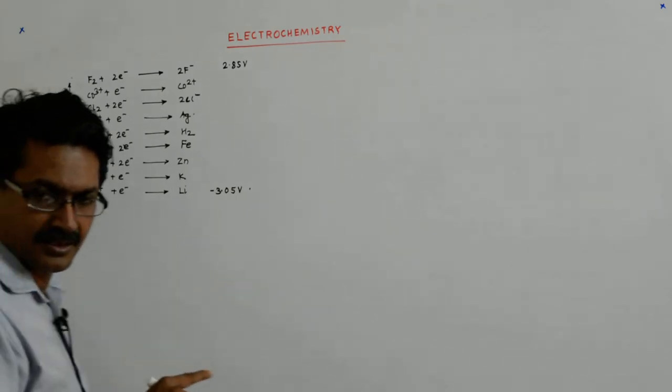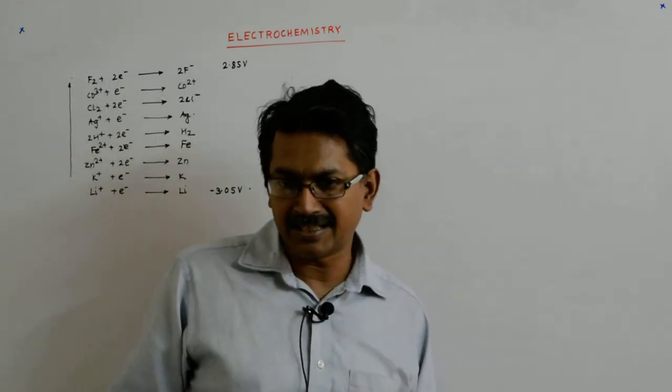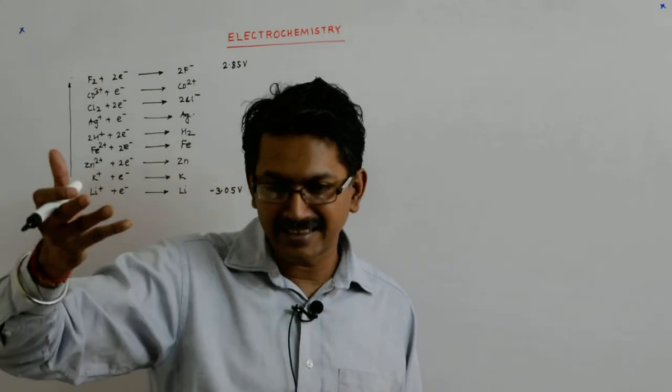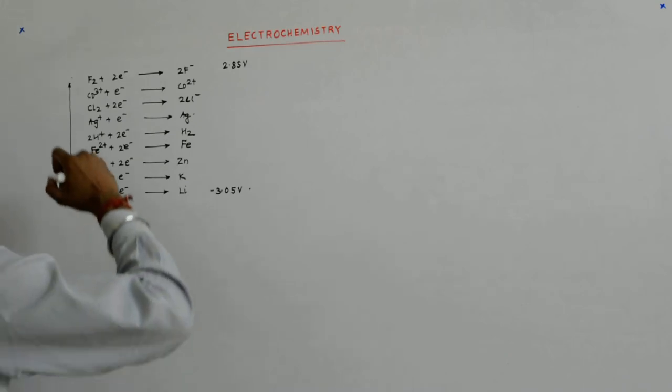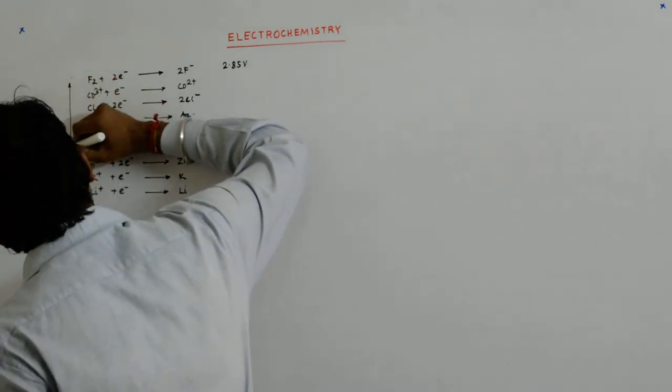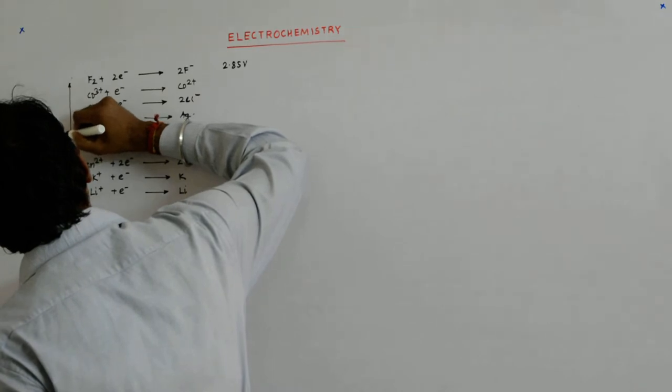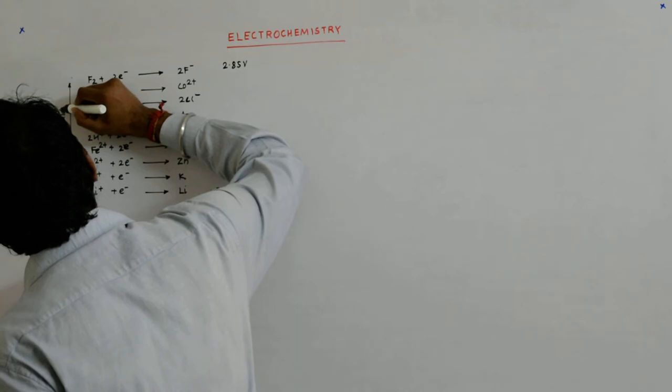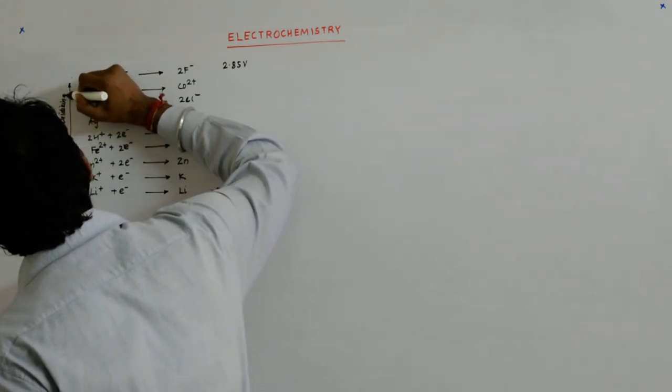And if they are reducing themselves, that means they are capturing electrons from somewhere and they are oxidizing the other species. So, this is the increasing oxidizing power.